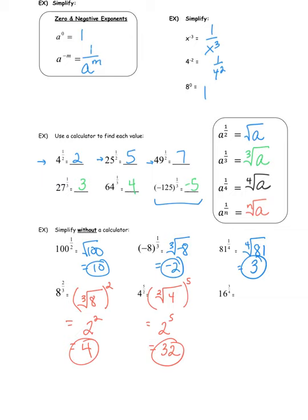For 16 to the 3/4: that's the fourth root of 16, and that whole thing is raised to the 3rd power. What's the fourth root of 16? It's an even number, probably 2 or 4. Try 2: 2 times 2 is 4, times 2 is 8, times 2 is 16. So the fourth root is 2, and 2 to the 3rd power is 8. Our answer is 8. You can check any of those on a calculator.